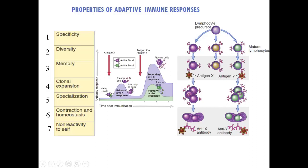Clonal selection occurs as follows: lymphocytes develop and mature, equipped with special receptors, and are deployed to lymphoid organs. When they interact with an antigen — for instance antigen X or antigen Y — these antigens select and expand specific clones of lymphocytes. Antibody X will only react in the future to antigen X, while antibody Y reacts only to antigen Y. Antigen-specific immune responses can thus occur in the future when the same antigens are encountered by these clones of cells.